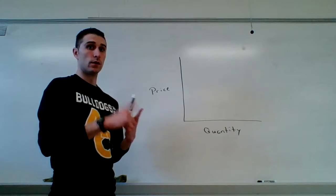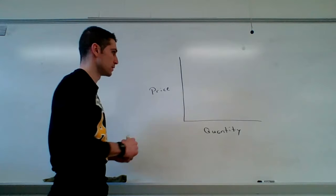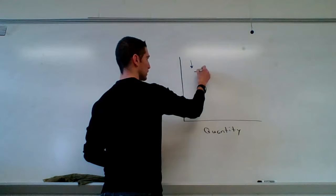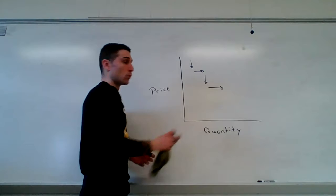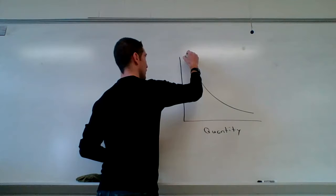If you remember correctly, the law of demand states that the less something costs, the more you're willing to buy of it, and that makes sense. You buy things when they are cheaper. As the price falls, your quantity that you are willing to buy goes up. Each time the price drops, quantity goes up. What we end up with is a demand curve that slopes down and to the right.